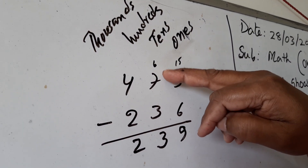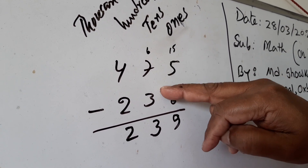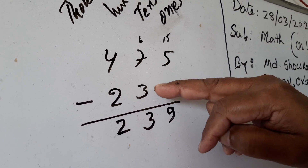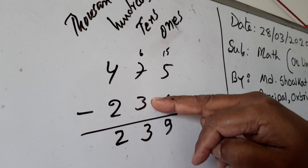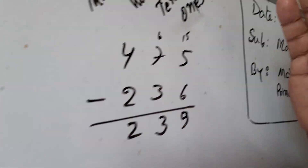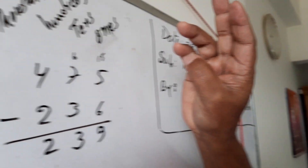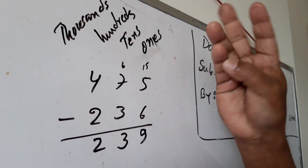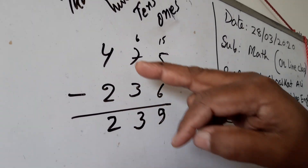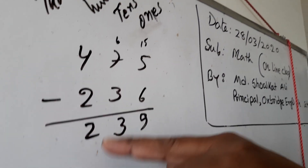Now left here is 6. 6 minus 3 — you count from 3: 4, 5, 6 — that is 3. Write 3 here. And 4 minus 2 equals 2. So 7,475 minus 236 equals 239.